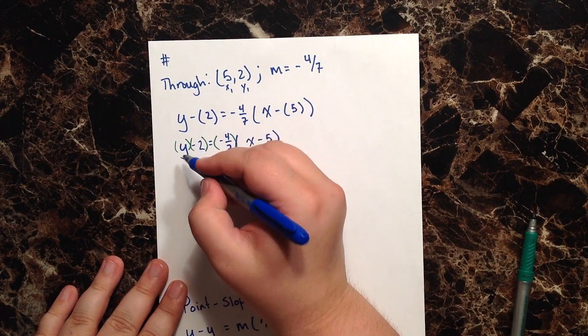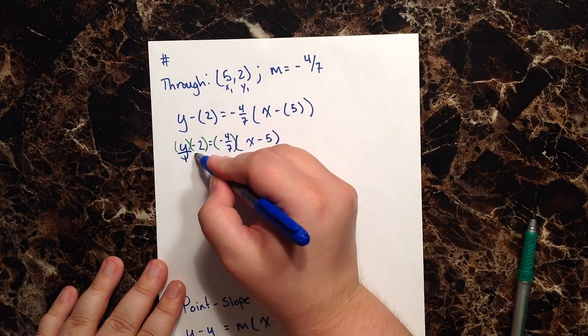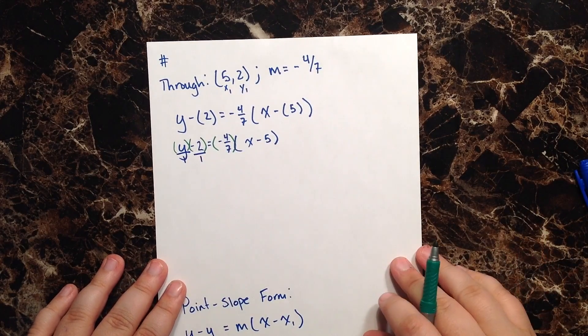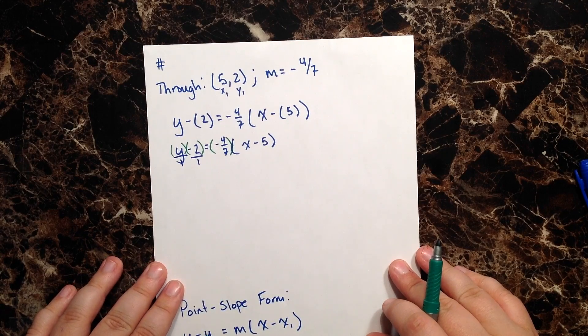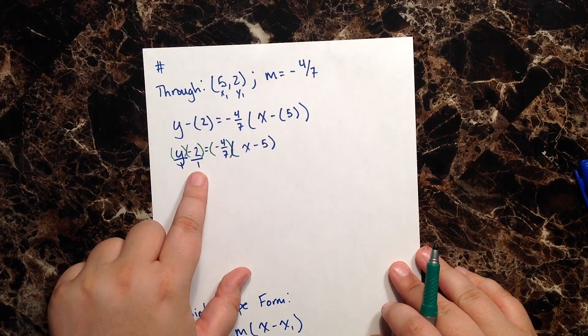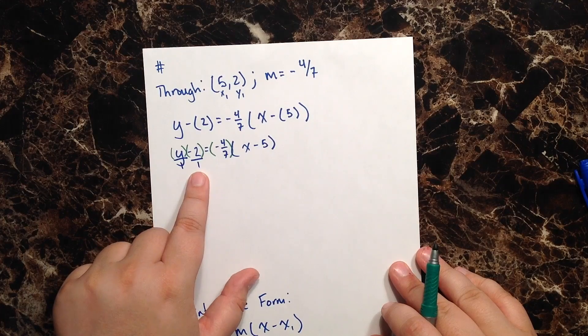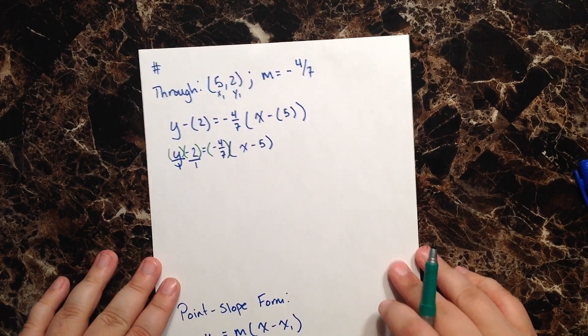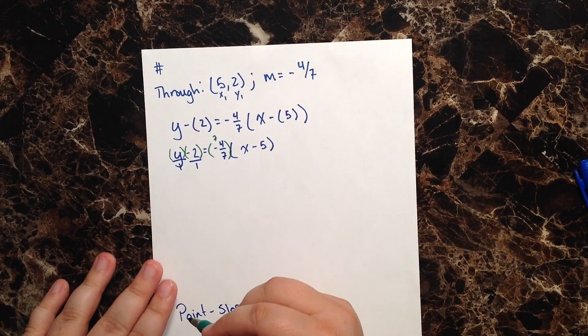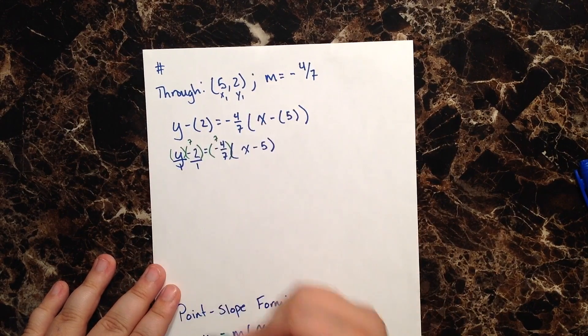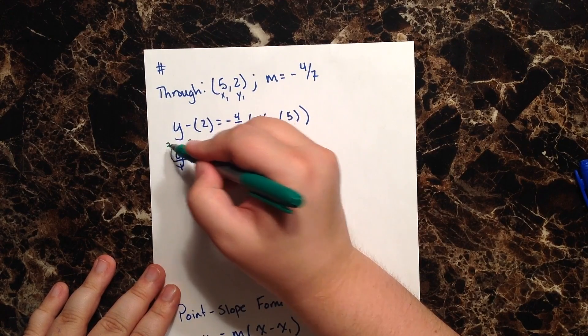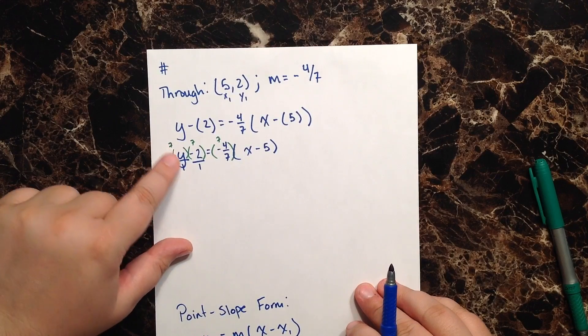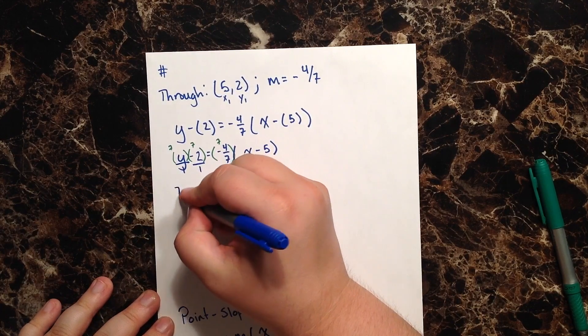Because remember, we can really write y over 1, negative 2 over 1, and then of course our m is already in a fraction with a denominator of 7. So since I have 1 here in both of these denominators, I can make all three denominators really anything I want. So if I multiply this by 7, and I multiply this by 7, and multiply this by 7, then what I'm going to get is 7 times y simply gives me 7y. Negative 2 times 7 is going to give me a negative 14.